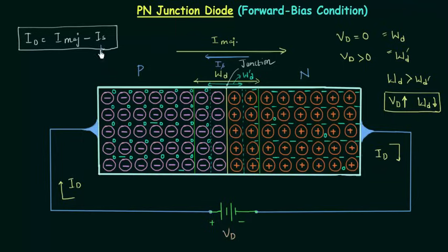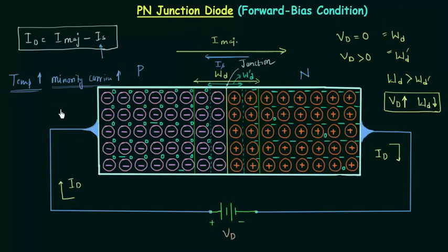What will be the effect on reverse saturation current due to the forward bias potential? As mentioned in the first lecture, the number of minority charge carriers depends only on temperature. If temperature remains the same, the number of minority charge carriers will also remain the same. So the reverse saturation current will remain the same because temperature is not changing and it only depends on minority charge carriers. However, there is a change in diffusion current since the depletion layer is reducing due to the applied forward potential.